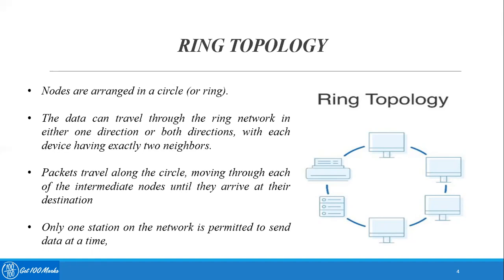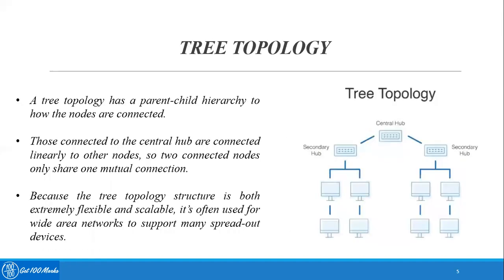Similar to star and bus topology, in ring topology only one system can operate at a time in the network. Now let's talk about tree topology. A tree topology has a parent-child hierarchy for how the nodes are connected. The secondary hub is called the parent, while the subdivisions are called children, which is why it is called a parent-child hierarchy.